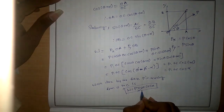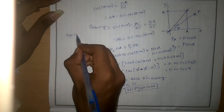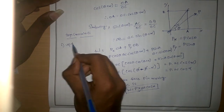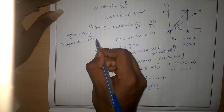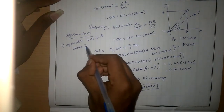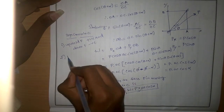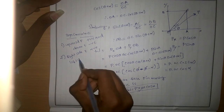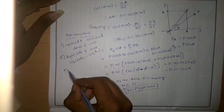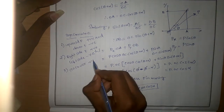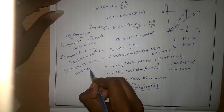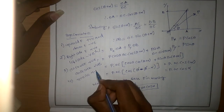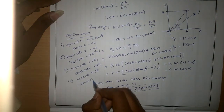Now let us discuss the sign conventions. Upward forces are positive and downward forces are negative. Right-side forces are positive and left-side forces are negative. Clockwise moments are positive and anti-clockwise moments are negative. Tensile forces are positive and compressive forces are negative.